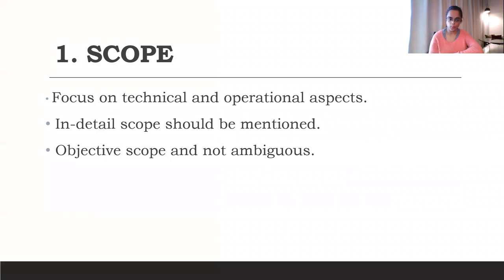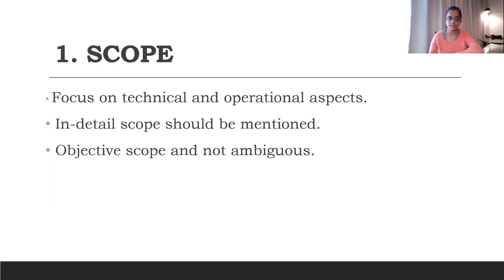First is the scope. A SOW should have a very detailed scope of the work that you are going to undertake. One master services agreement can have multiple SOWs executed within it. Focus on the technical and operational aspects of a SOW. For example, if you are providing software services, you should focus on minute details of these services and capture them in writing so that later on there is no scope for confusion. There should also be no scope for ambiguity while defining scope.